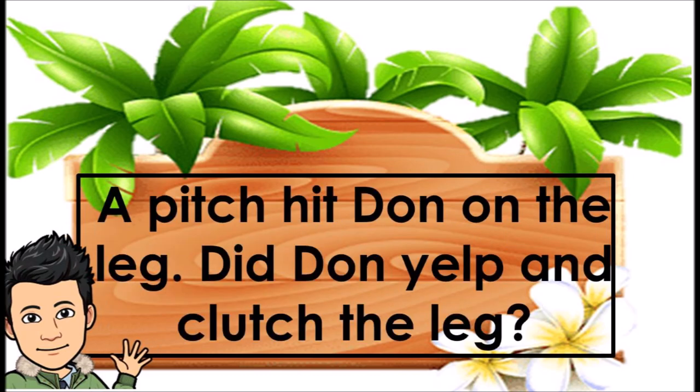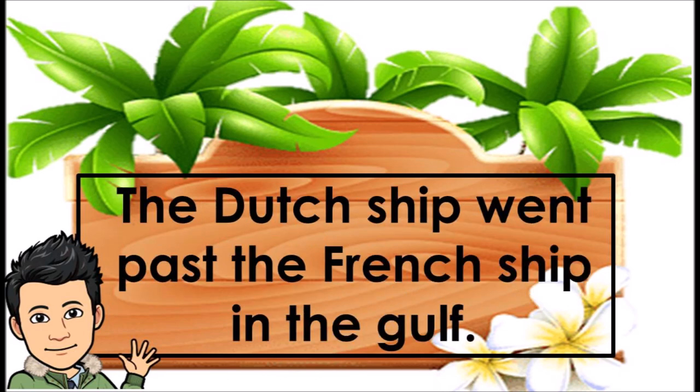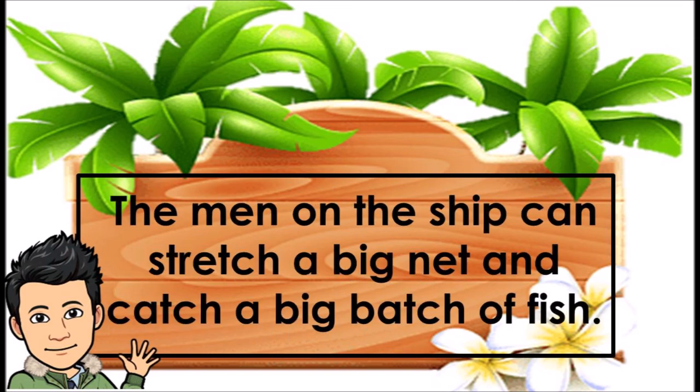Did Don yelp and clutch the leg? Did Don limp? Did Don get a crutch? The Dutch ship went past the French ship in the Gulf. The men on the ship can stretch a big net and catch a big batch of fish.